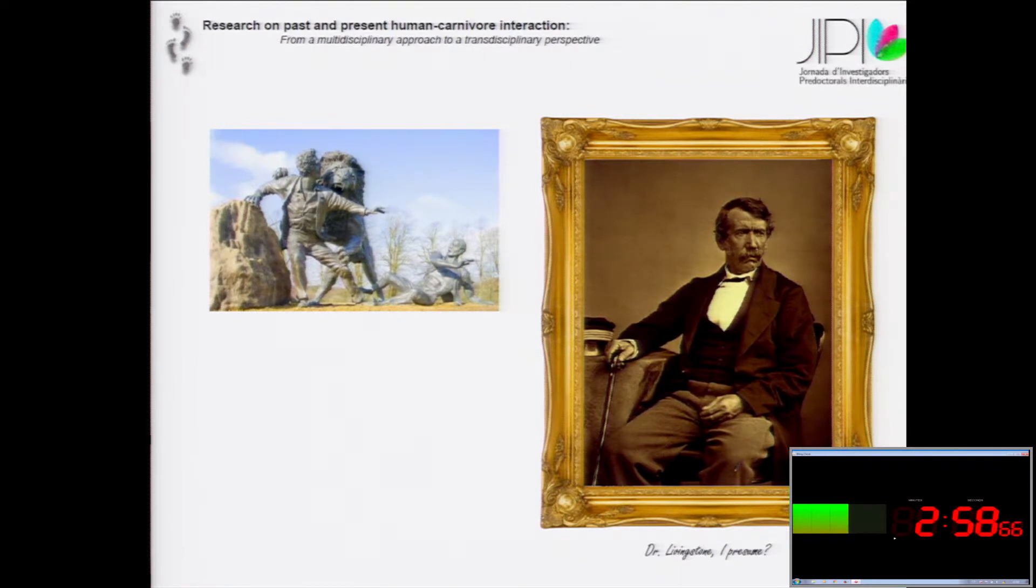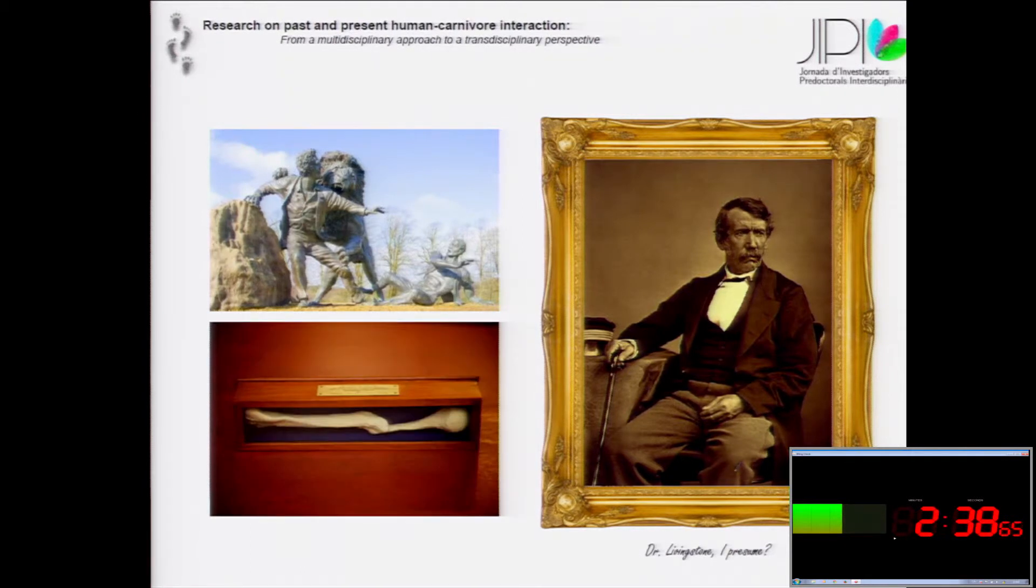Many years later he died and his body was transported from Africa to London. You can imagine how his body arrived to London. It was impossible to identify who the hell was this person in the box. So his doctor remembered that he was mauled by a lion and he said, let's have a look at his left humerus. And the humerus was exhibited at the museum. There was a pathology at the humerus.